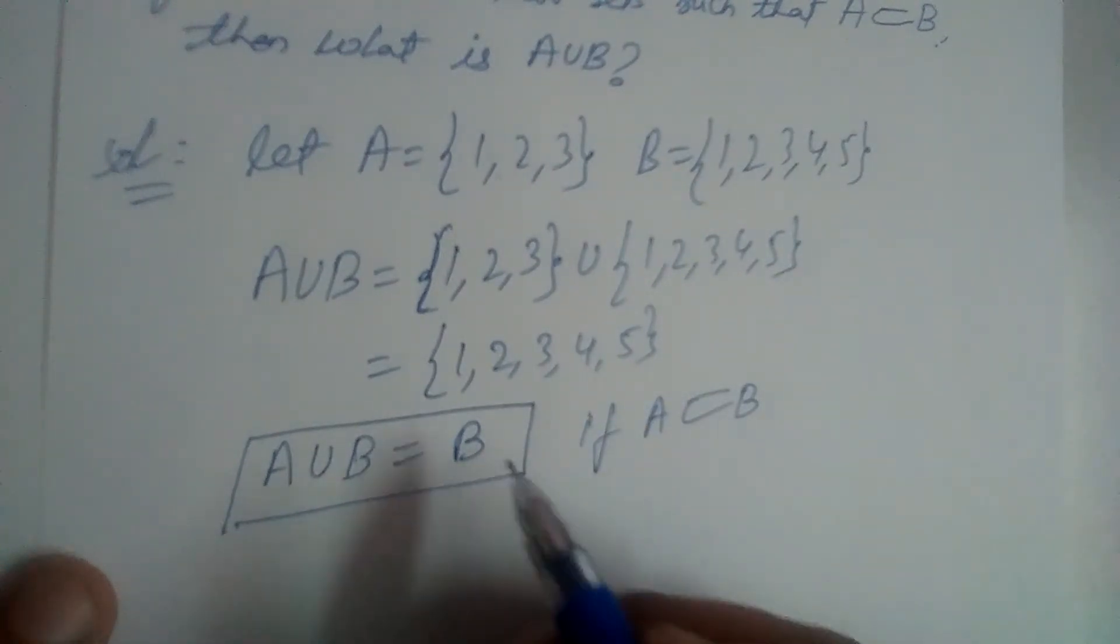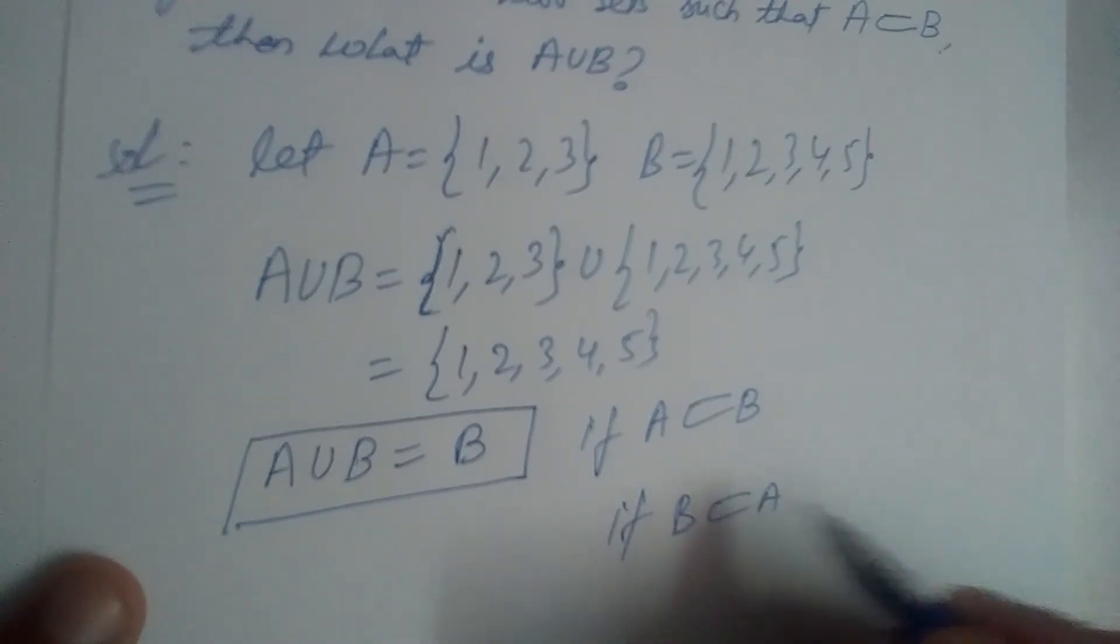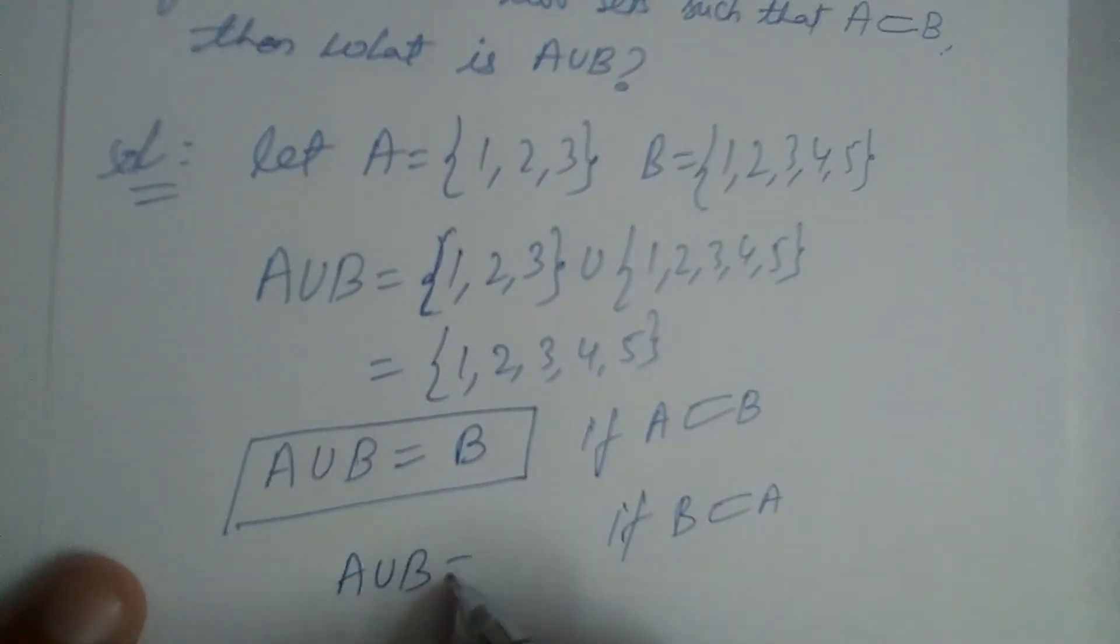Now, if B is a subset of A, then A union B will be equal to A. I'll leave this to you to prove. Thank you.